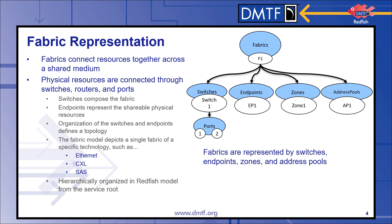Switches compose the fabric and endpoints represent the shareable physical resources connected to that fabric. The fabric is organized as a topology provided by the switches and endpoints and how they are connected. The fabric model represents a single fabric of a specific technology like Ethernet, SAS, or CXL. However, a service route could have multiple fabric models for different fabric types, as the fabric model is hierarchically organized in Redfish from the service route.